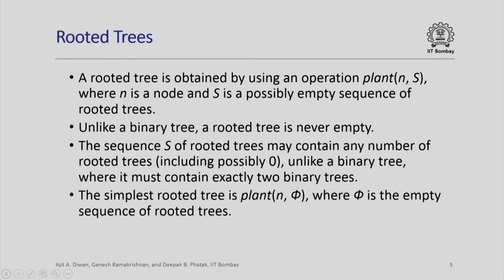We look at one general class of trees called rooted trees. Similar to a binary tree, we have a single operation called plant(n, s), where n is a node. But instead of having just two trees left and right, we have a sequence of rooted trees s. A rooted tree is obtained by taking a node n and any sequence of rooted trees s. Since sequences of any type are already defined, we can take a sequence of rooted trees and plant it with node n to get another rooted tree.